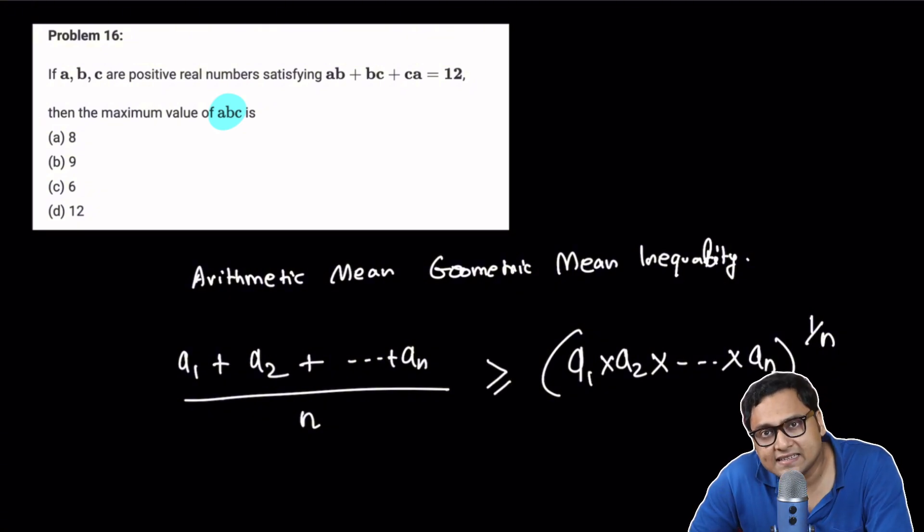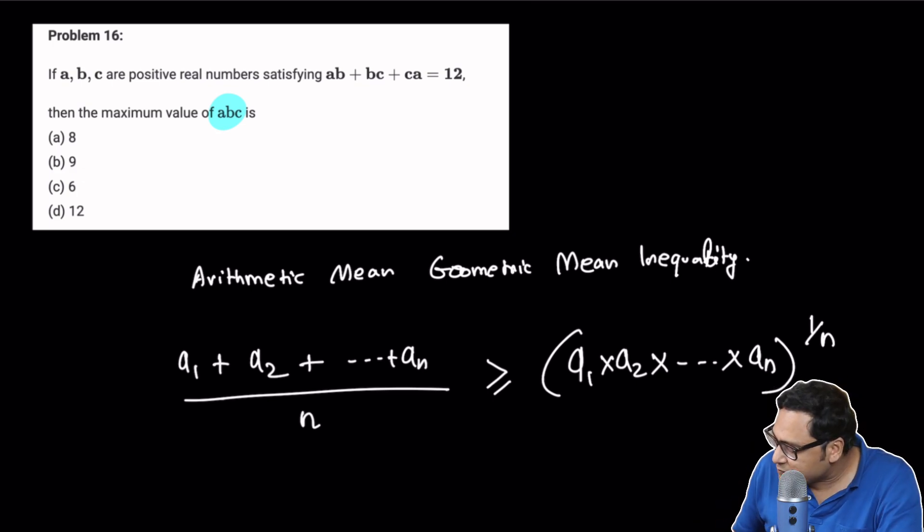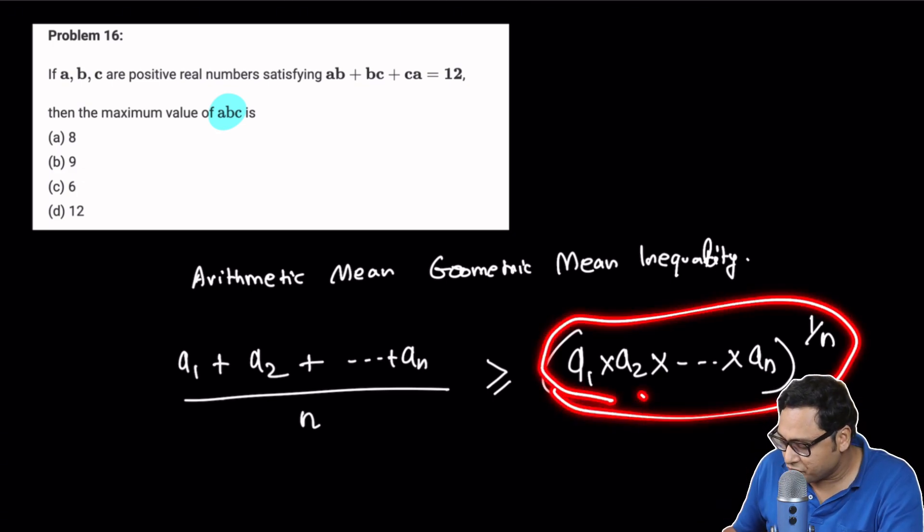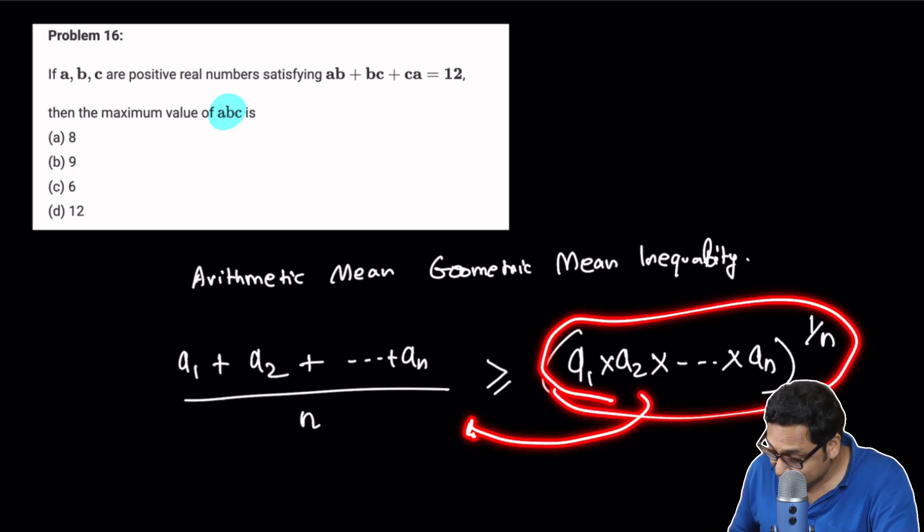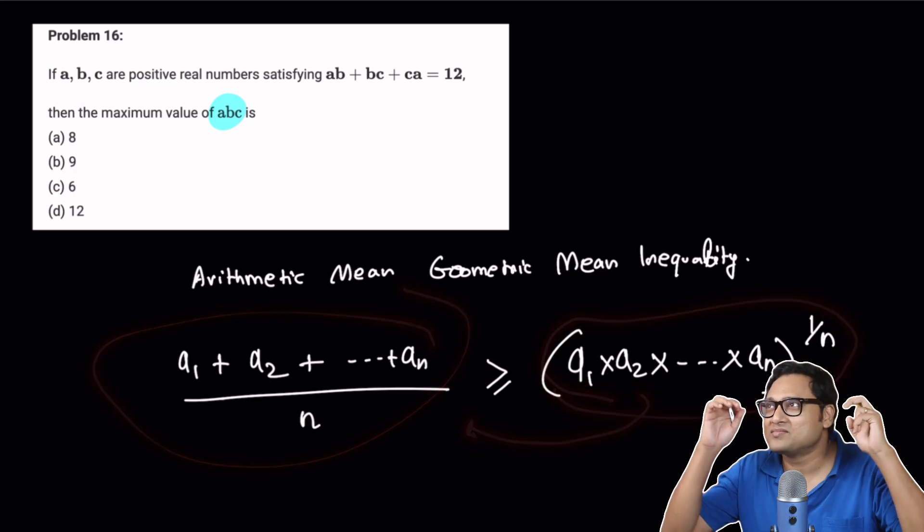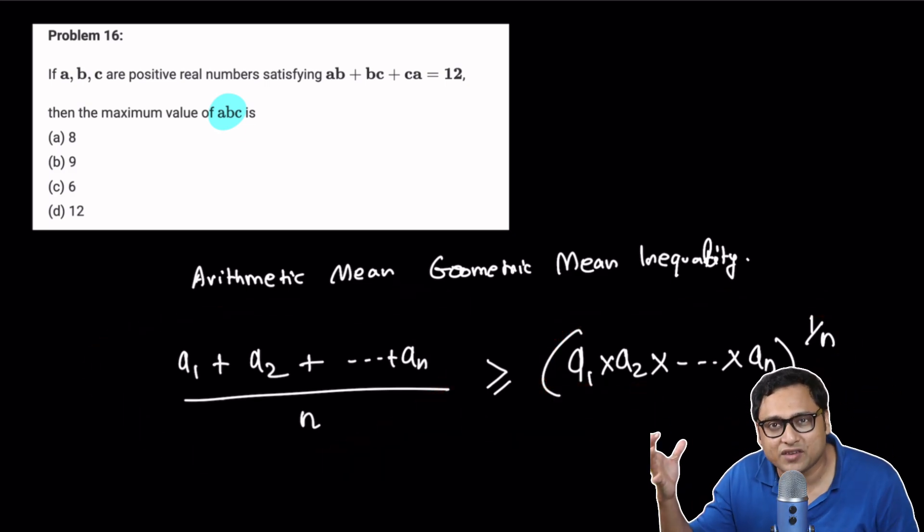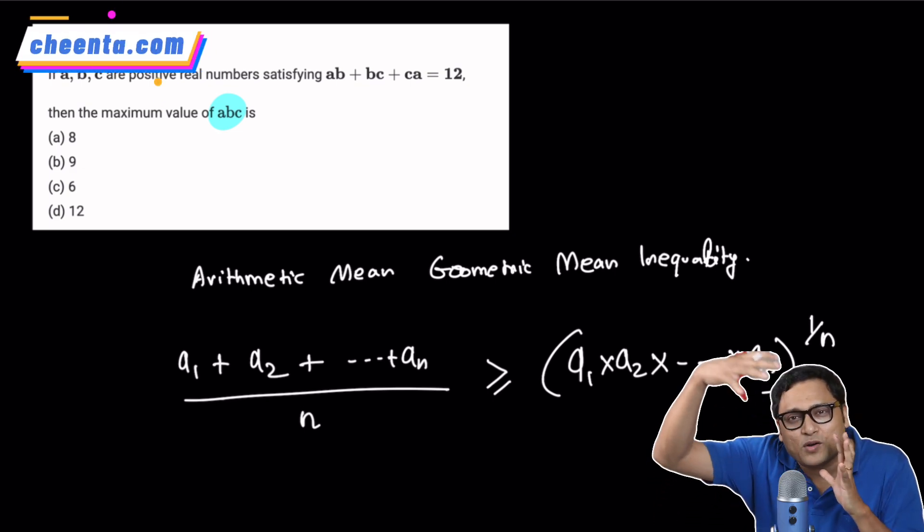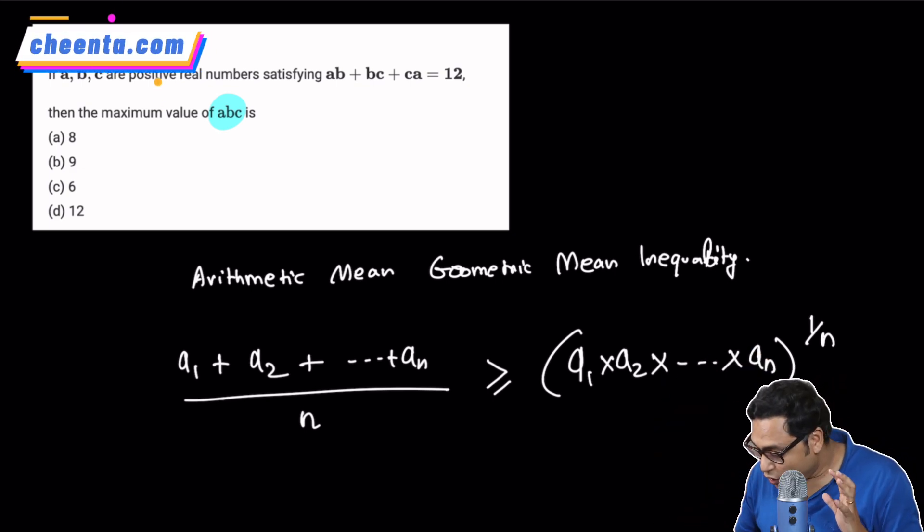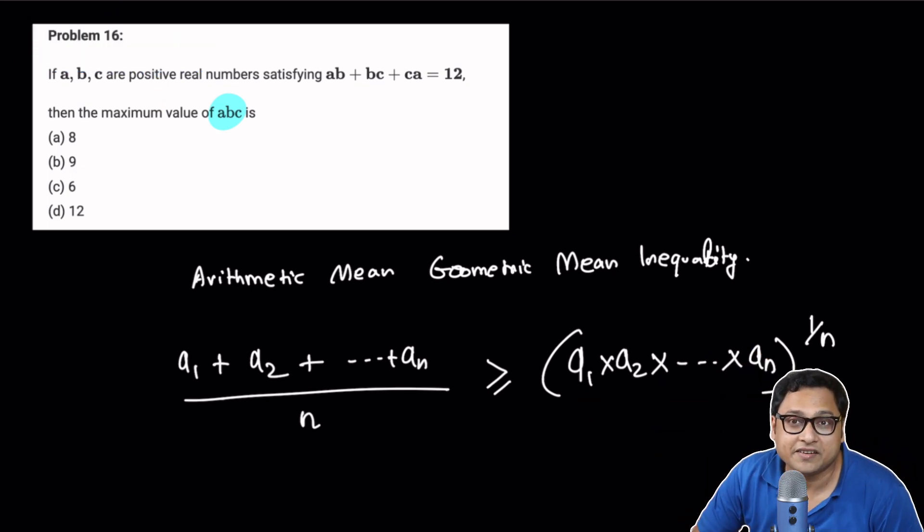It additionally says that the largest possible value of geometric mean is the arithmetic mean. This is the second line of the inequality which sometimes students forget. The largest possible value of the geometric mean is actually equal to the arithmetic mean.